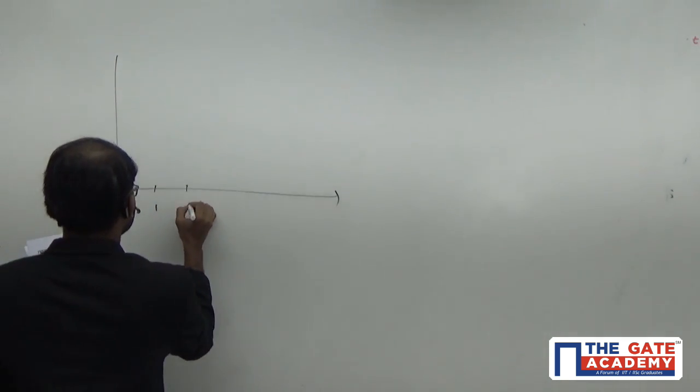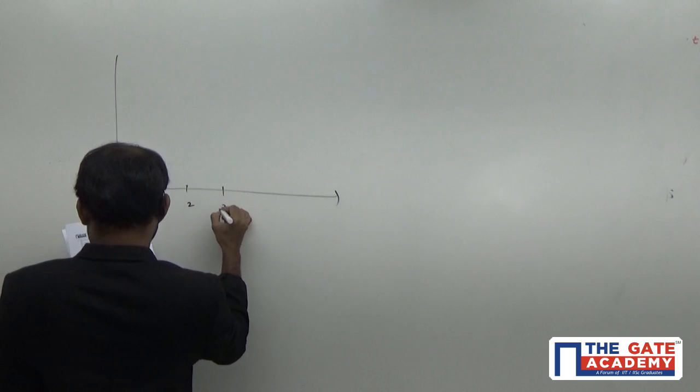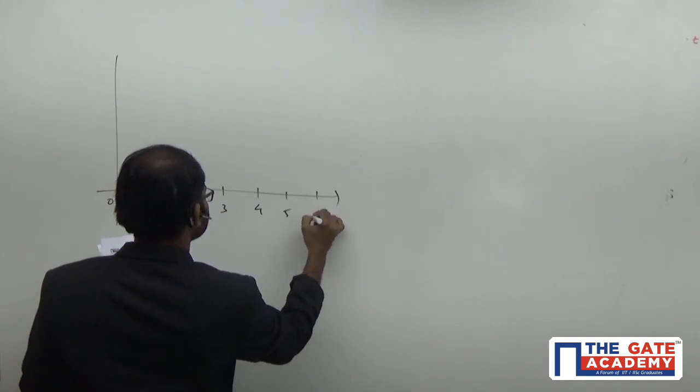So, 0, 1, 2, 3, 4, 5, 6. So, velocity graph is going on like this.